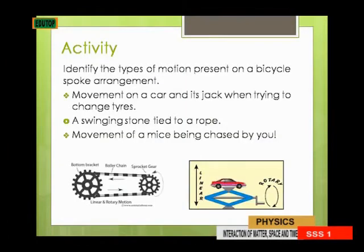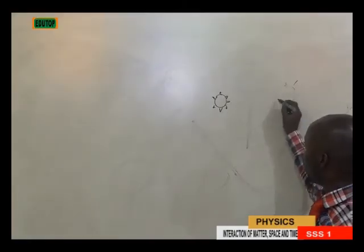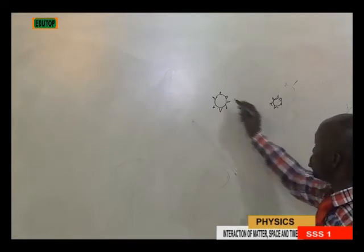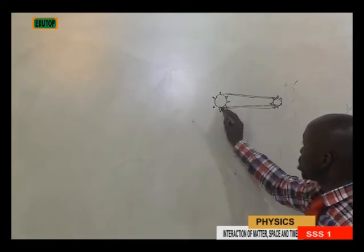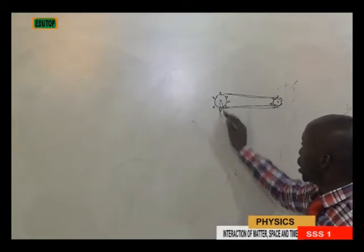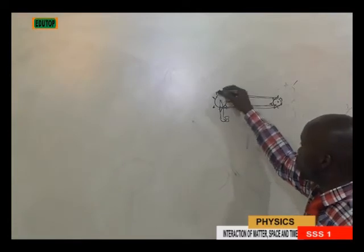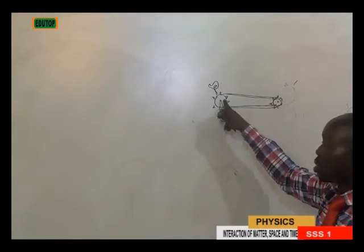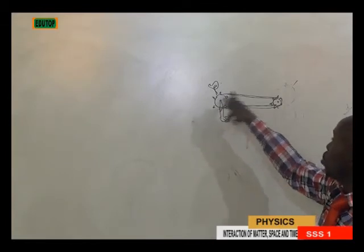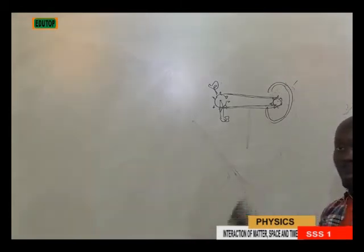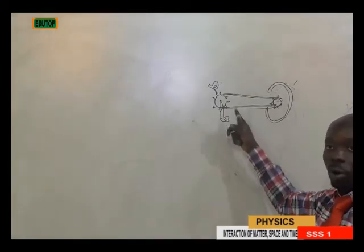Without wasting time, let's go to the activity. Activity 3 says: identify the types of motion present in a bicycle speed and bicycle sprocket arrangement. When you look at a bicycle sprocket — the pedal is rolled, it moves the sprocket, and the sprocket brings about the movement of the back wheel. That would definitely be what we call relative motion — the motion of one body bringing about the rotation of the other.